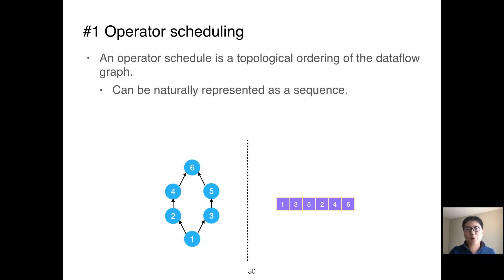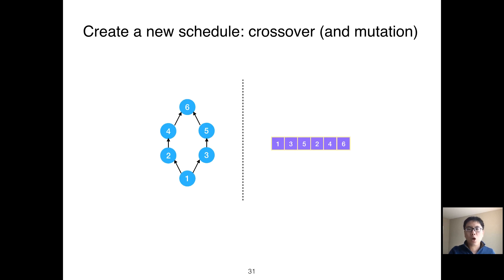The first one is operator scheduling. In our setting, an operator schedule of a dataflow graph is actually the topological ordering of the dataflow graph. As a result, it is natural to encode an operator schedule as a sequence. With the encoding, we can use crossover and mutation, two genetic algorithm operations, to generate new schedules.